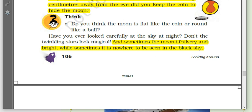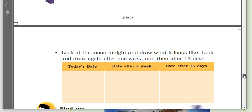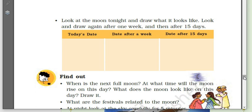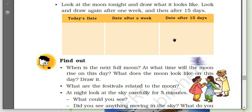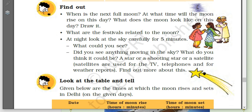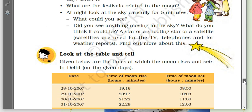Have you ever looked carefully at the sky at night? Don't the twinkling stars look magical? Sometimes the moon is bright while sometimes it is nowhere to be seen in the dark sky. You can make a chart of today's date, the date after a week, and the date after 15 days, and draw the shape of the moon each time. You will find that the moon keeps changing its shape from a crescent to a full moon.